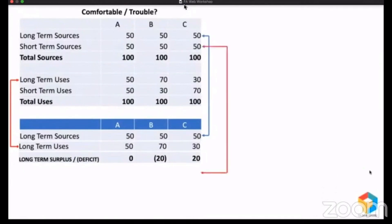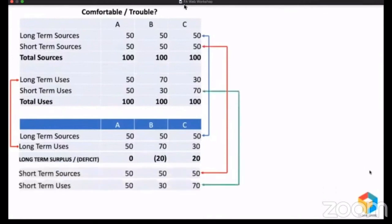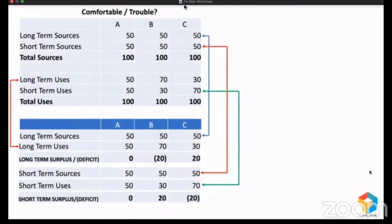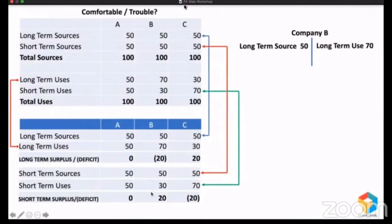Now let me take short-term sources and compare that with short-term uses. For Company A, obviously no surplus, no deficit. But Company B raised a short-term fund of 50 and used only 30 — they had a surplus of 20. And Company C raised only 50 but used 70 — they had a deficit. So it might look like Company C is in trouble and Company B is comfortable. But that's not the correct understanding. Pay attention here. Company B raised a long-term source of 50 but created a long-term use of 70. How is that possible? With 50, you cannot create 70. So they got that remaining 20 from their short-term surplus. This short-term surplus of 20, combined with the long-term source of 50, gave them 70 which they used for long-term purpose. And because of this reason, we say Company B is in trouble.